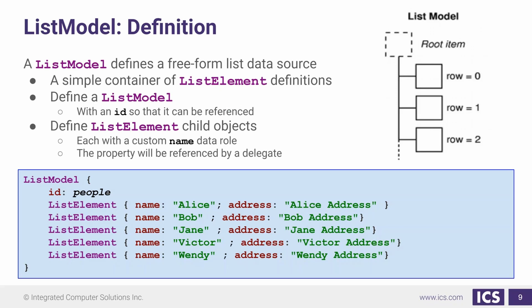If we were to think about the way that this list is organized, it would be like what we see up in the top right here, where we have a root item — which is something we're not able to access — but under that we have some number of rows, and each one of these list elements would be a row in that list.